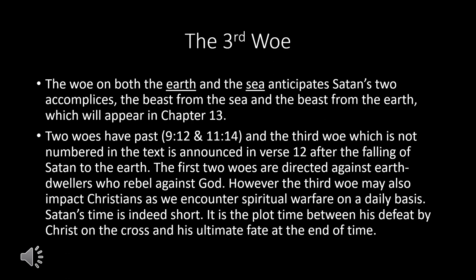The woe on both the earth and the sea anticipates Satan's two accomplices: the beast from the sea and the beast from the earth, which will appear in chapter 13. We've already seen two woes — the eagle in chapter 9 was the first, and then the second woe in chapter 11:14. Now we have the third woe, even though it's not numbered in the text — it is announced in verse 12 after the falling of Satan to the earth. The first two woes were directed against earth dwellers who rebel against God. The third woe may also impact Christians as we encounter spiritual warfare daily, because Satan's time is indeed short — the plot time between his defeat by Christ on the cross and his ultimate fate at the end of time.